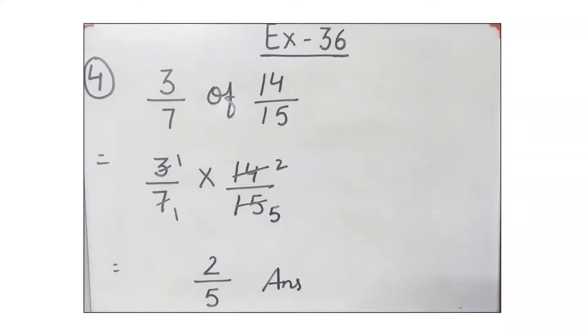Can we cancel 7 and 14? Yes, by table of 7: 7 ones are 7, 7 twos are 14. Can we cancel 3 and 15? Yes, by table of 3: 3 ones are 3, 3 fives are 15. Now we have 2 as numerator and 5 as denominator. Therefore, 2 by 5 is the answer.